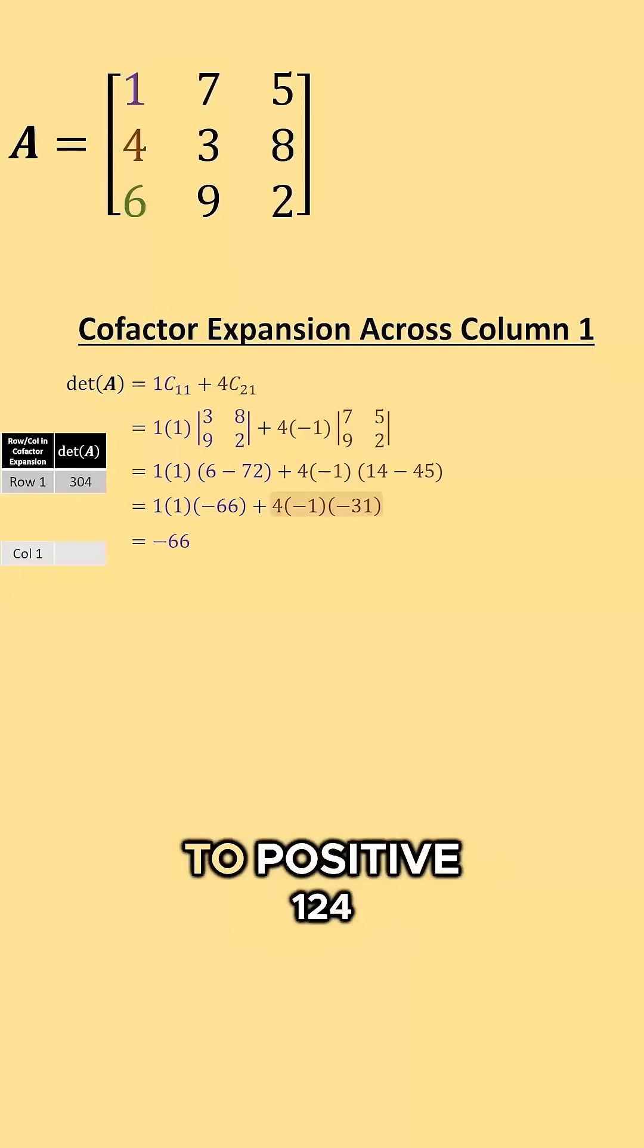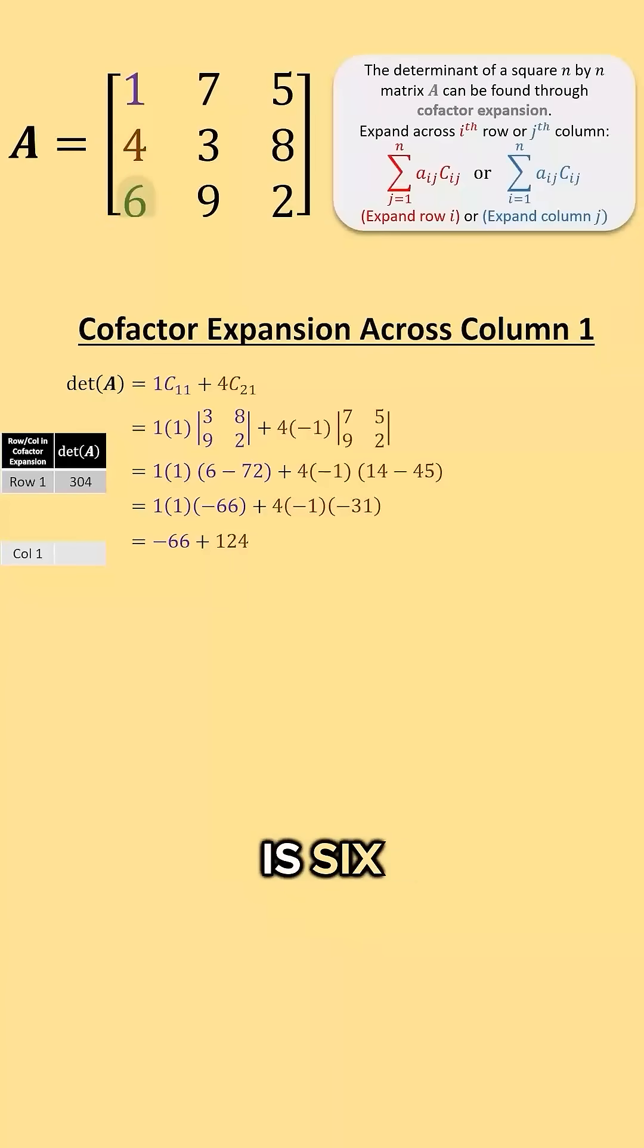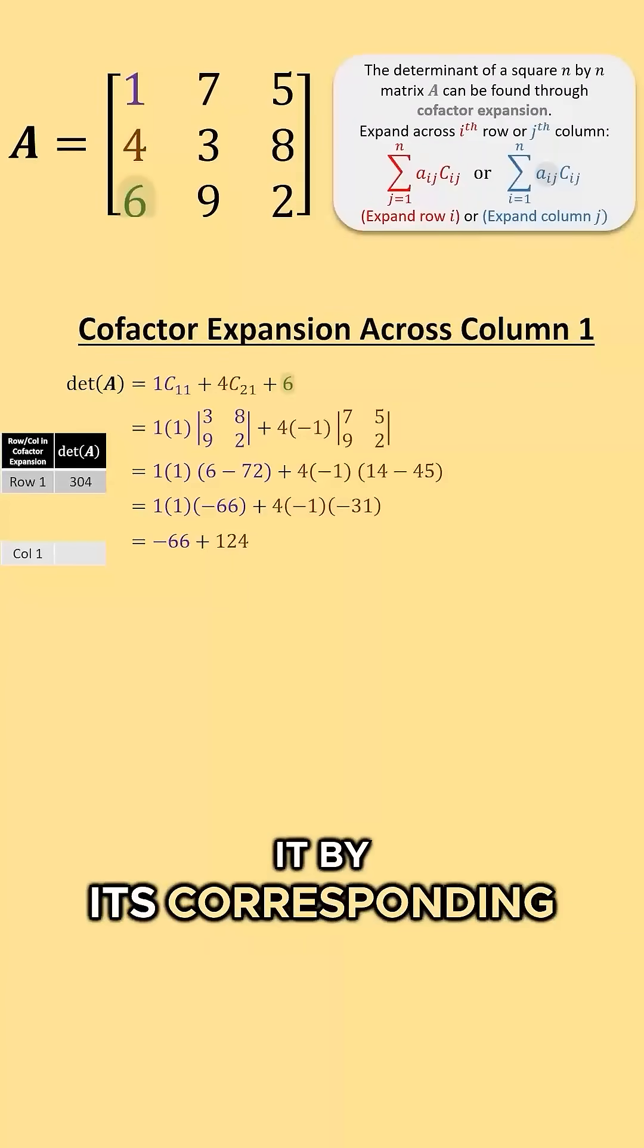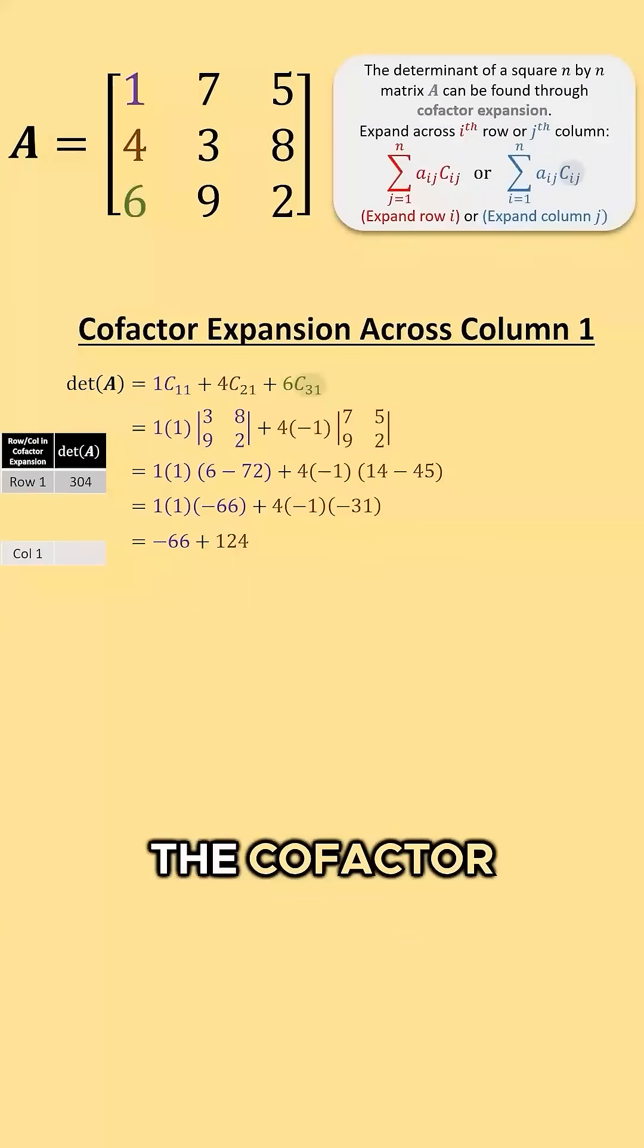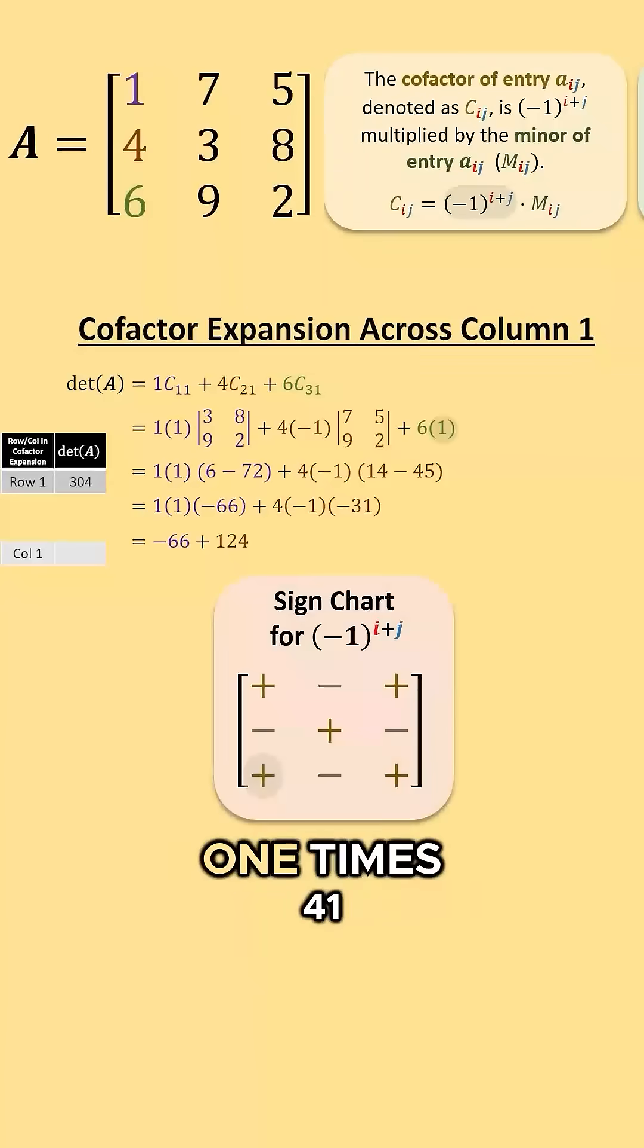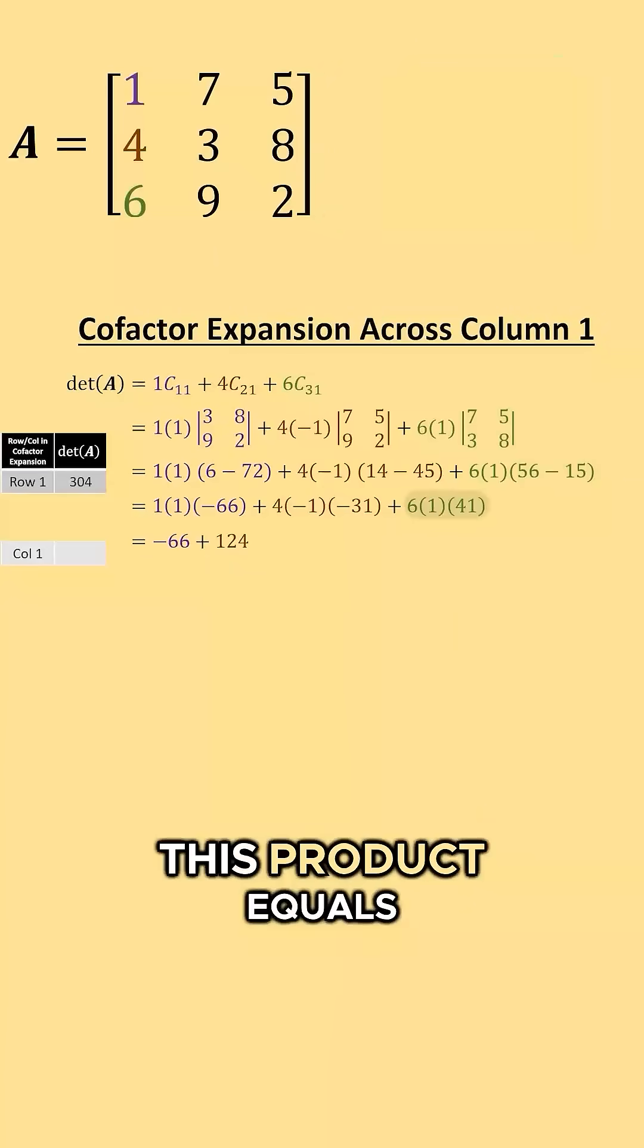This product is equal to positive 124. The third entry of column 1 is 6 and we multiply it by its corresponding cofactor. The cofactor which equals positive 1 times 41. This product equals 246.